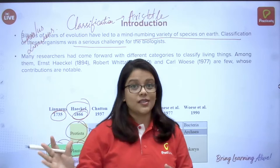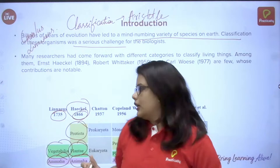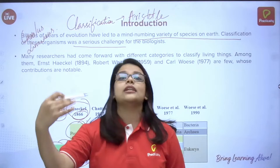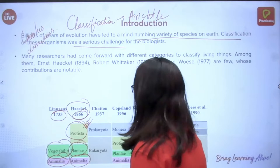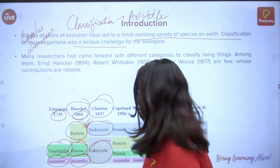Haeckel's Protista was basically a simple format — he took all bacteria, fungi, and other simple organisms and put them together in Protista. That was later found to be incorrect, but for the time — the 1800s — when science had not yet developed fully, it was acceptable. Then another person, Chatton, in 1937, divided organisms into Prokaryota and Eukaryota.